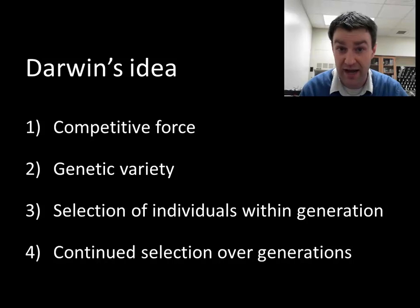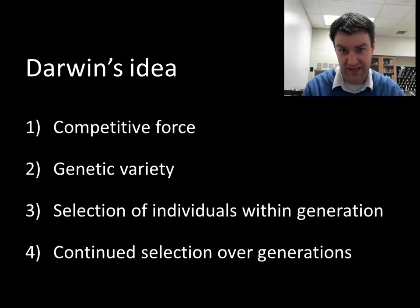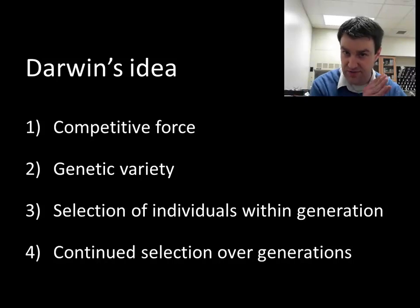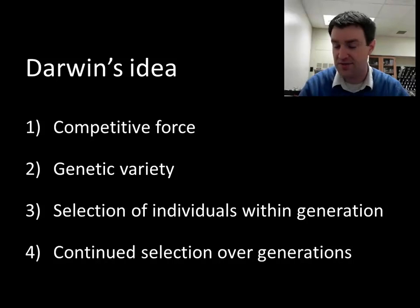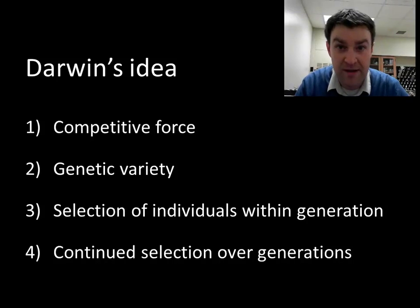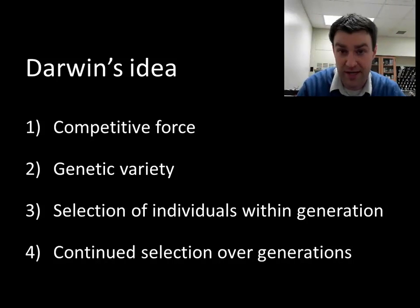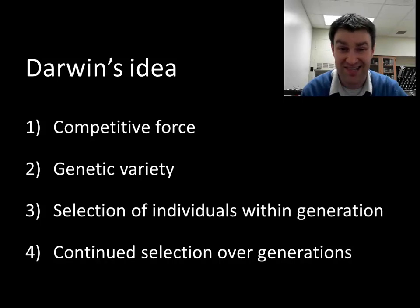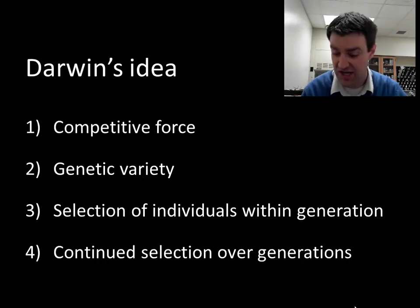There also has to be genetic variety among the individuals within a population. There has to be something to select from — there have to be differences between individuals. Step three: once you have differences between individuals and some kind of competitive force, then you can have selection of individuals. Perhaps individuals with phenotypes that make them more successful will survive to reproduce more. Last step: that has to continue over many generations to really cause the population to change.